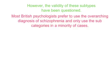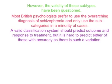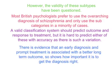However, the validity of these subtypes has been questioned. In practice, most British psychiatrists prefer to use the overarching diagnosis of schizophrenia and only use the subcategories in a minority of cases where there is very close correspondence to the criteria. A valid classification system should be able to predict the outcome and response to treatment. However, it has proved very difficult to predict either of these with accuracy, as there are wide individual variations. There is now evidence that an early diagnosis and prompt assignment to treatment is associated with a better long-term outcome for people with schizophrenia, demonstrating how important it is to get the diagnosis right.